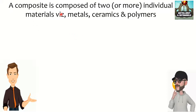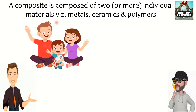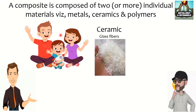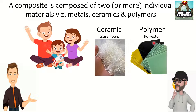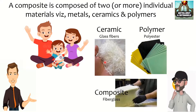Basically, a composite is composed of two or more individual materials like metals, ceramics, and polymers. For example, a child's face and character may come from their parents. Like that, when we mix two different materials, the resulting material's properties will have the parent materials' properties. For example, a ceramic material — glass fiber — and a polymer material — polyester — when we mix and produce a new material, it comes out as fiberglass, which has more strength and is more flexible also. So, this is what we call a composite material.